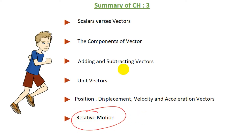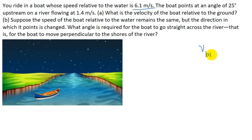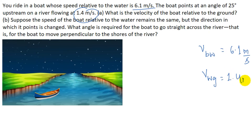This question is based on relative motion. We are given that you ride in a boat whose speed relative to water is 6.1 meters per second. The boat points at an angle of 25 degrees upstream on a river flowing at 1.4 meters per second. This 1.4 meters per second is the speed of water relative to ground.